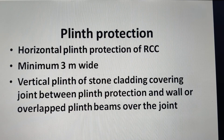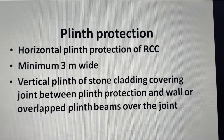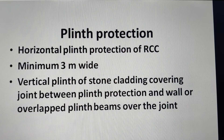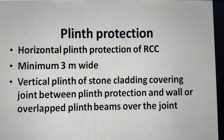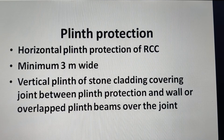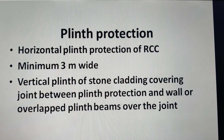Let us talk about plinth protection first. Generally, a horizontal plinth protection of CC about 90 cm wide is provided, but this plinth protection rests on black cotton soil, and very quickly it gets detached from the wall — creating a gap between the wall surface and the plinth protection. Water seeps into that joint and, once it does, it damages not only the plinth protection but also the foundation of the building.